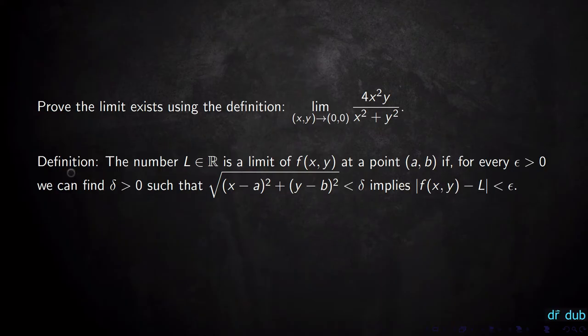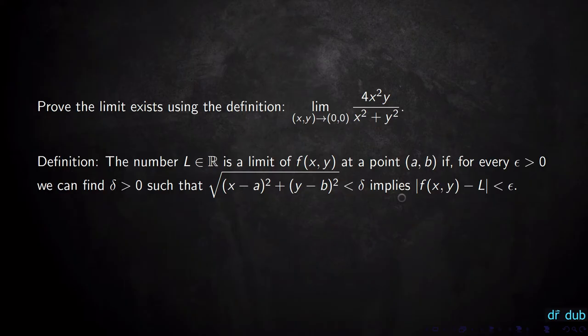First, let's look at the definition. The number L in the real numbers is a limit of a function f(x,y) at some point (a,b) if for every epsilon greater than zero we can find a delta greater than zero, such that when the distance from the point (x,y) to the point (a,b) is less than delta, that implies the distance between the function value and L is less than epsilon — the tolerance we chose.